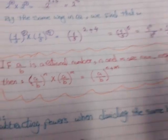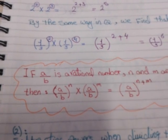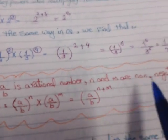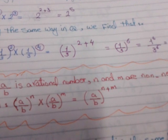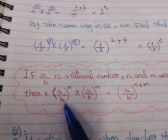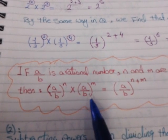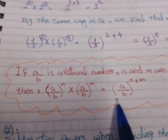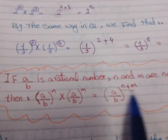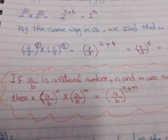The first rule: if A over B is a rational number and N and M are non-negative integers, then (A/B)^N times (A/B)^M equals A over B to the power N plus M. We take A over B and add the powers N plus M.